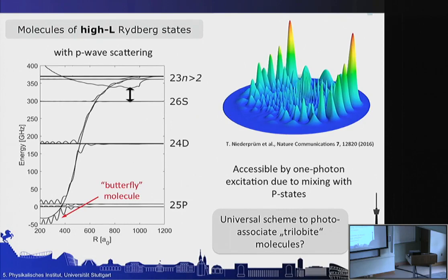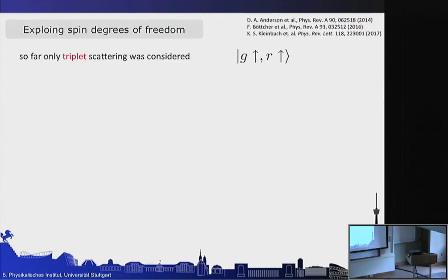We want to employ the spin degrees of freedom of the ground state atom — particularly the nuclear spin — to find a way to couple into these trilobite states. The trick is to bridge the energy gap between the S states and these trilobite states using the hyperfine coupling of the ground state, which is typically in the gigahertz regime. By choosing the principal quantum number appropriately, this gap can match the hyperfine splitting of the rubidium ground state, which is 6.8 GHz. The previously shown potential curves only included triplet scattering between the Rydberg electron and the ground state atom.